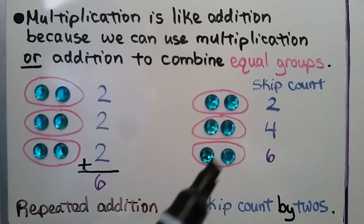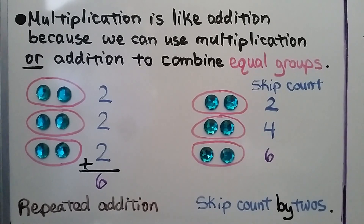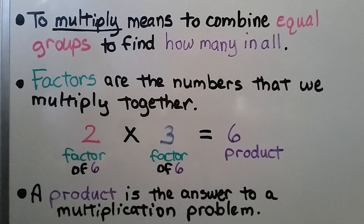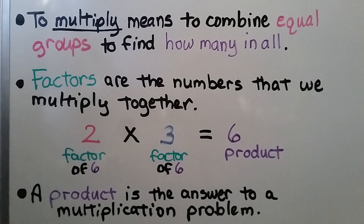We can also skip count: two, four, six — skip counting by twos. To multiply means to combine equal groups to find how many in all. Factors are the numbers that we multiply together. In two times three is equal to six, two is a factor of six, three is also a factor of six, and six is the product — it's the answer. A product is the answer to a multiplication problem.